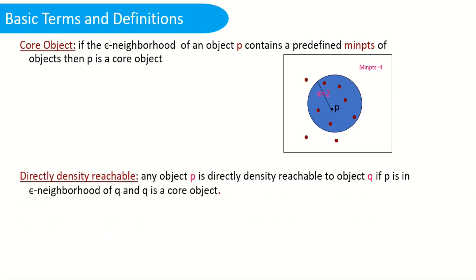The next term is directly density reachable. Any object P is directly density reachable to object Q if P is in the epsilon-neighborhood of Q and Q is a core object. Q is directly reachable to P because both P and Q are core objects and they are within the same epsilon region.